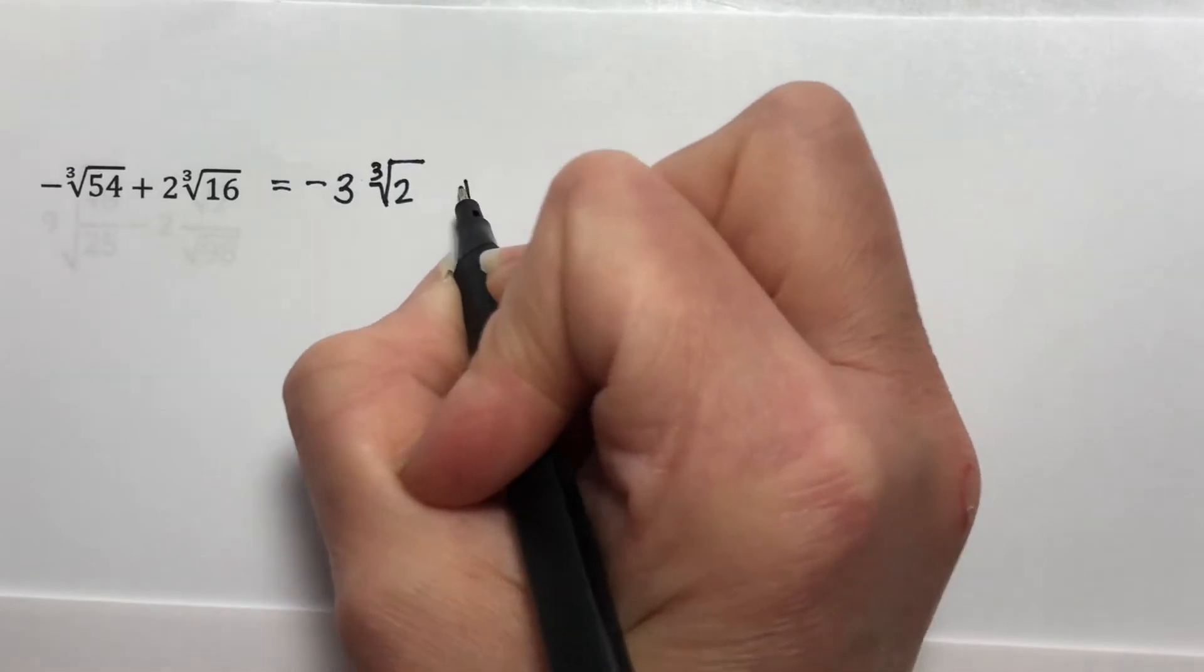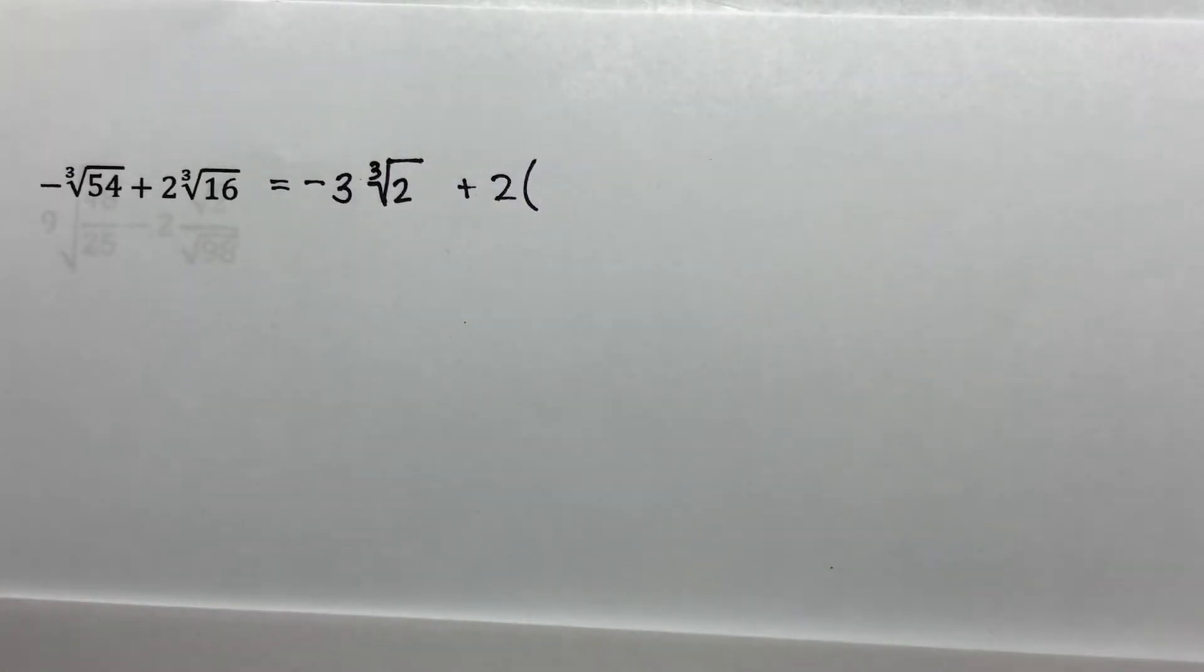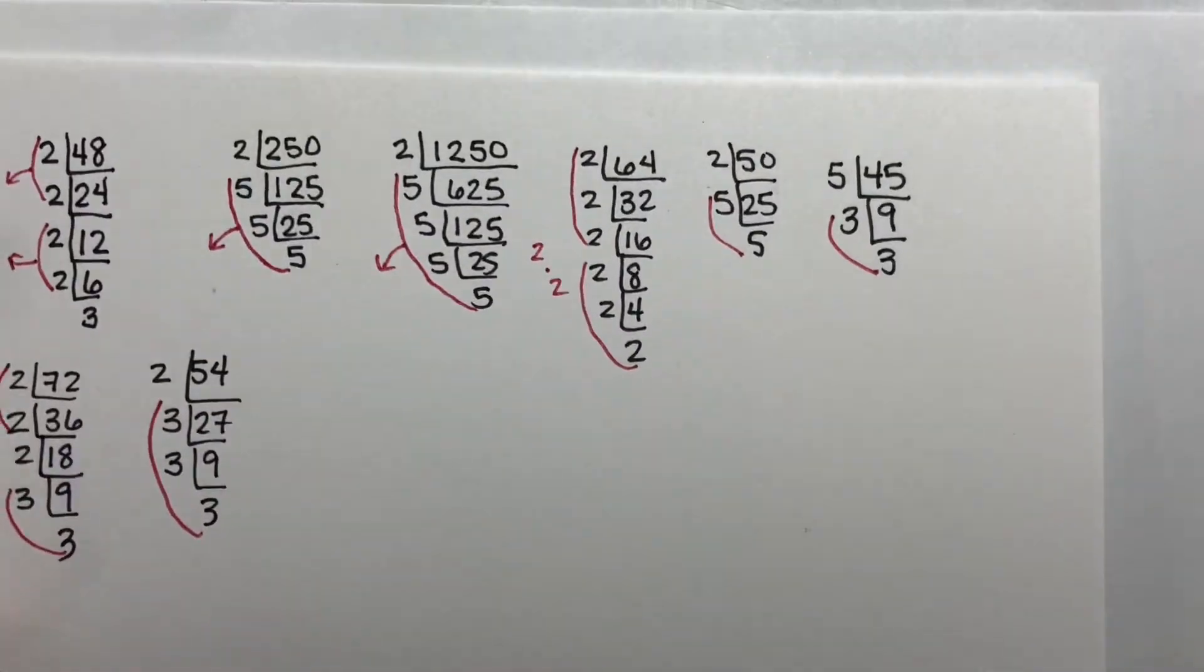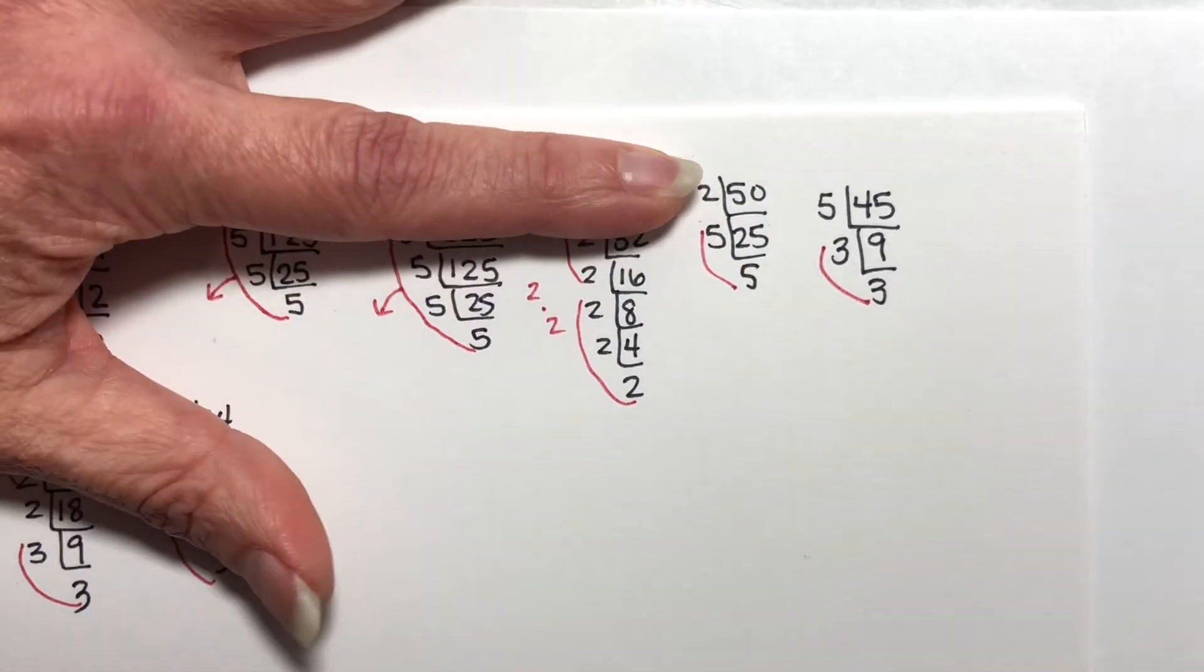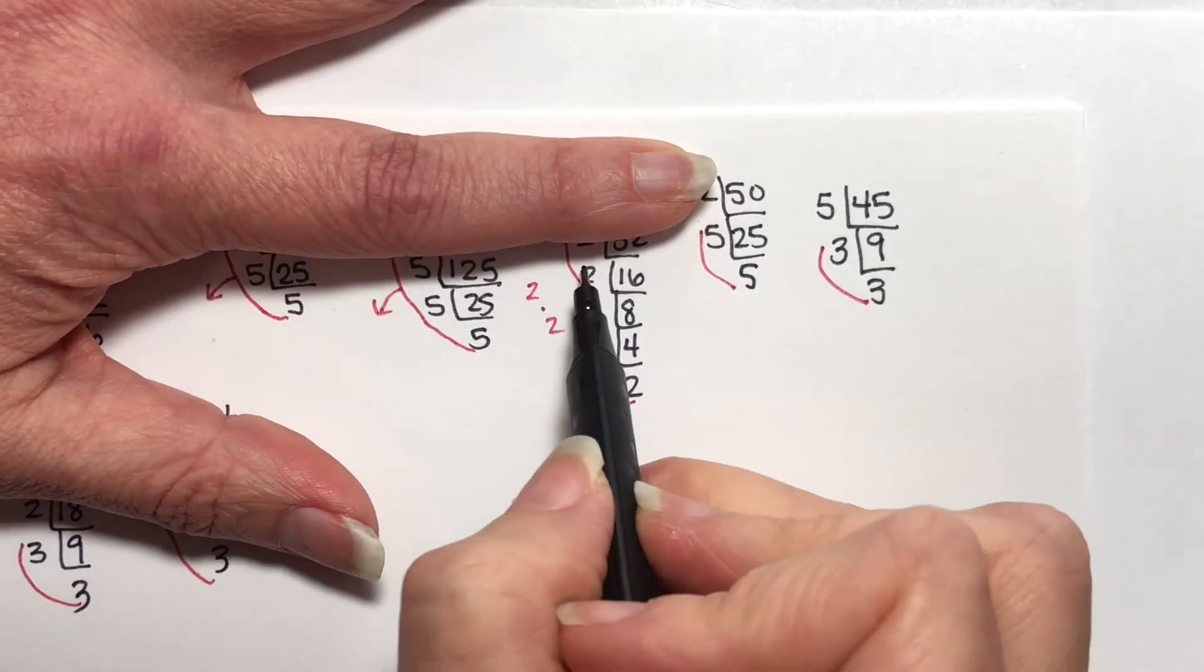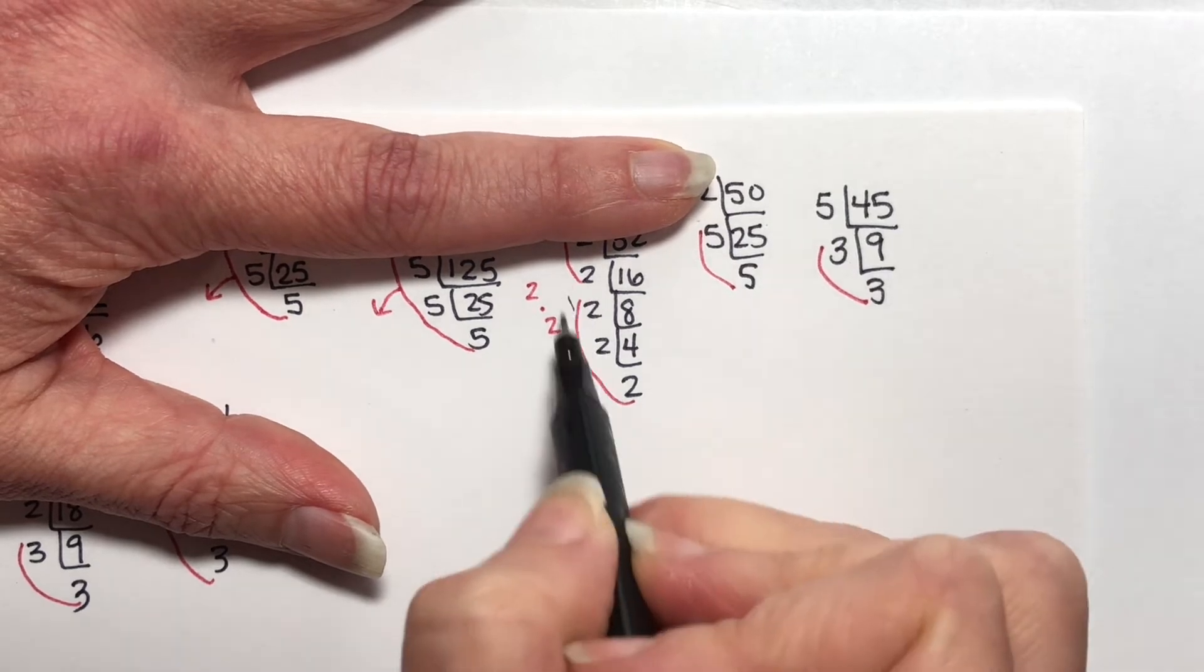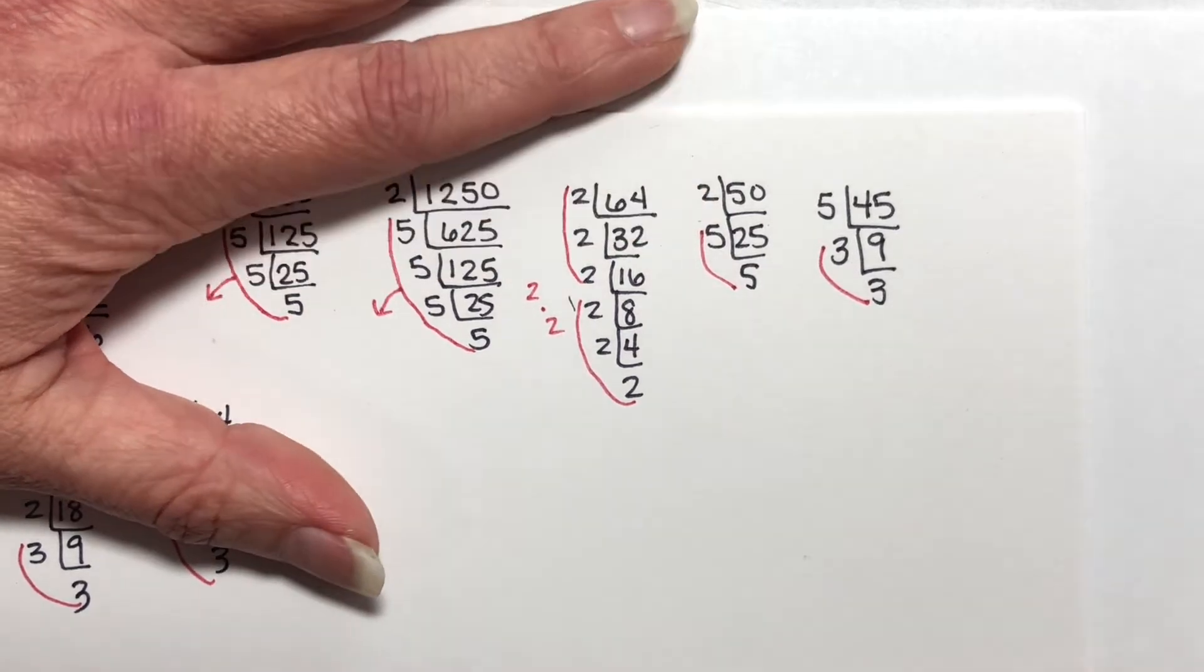Plus two times something, the cube root of 16. I have 16 right in here. So I cover up the 32 and above. I'm looking for three of a kind. So I have three twos here and one leftover. So this is going to be two times the cube root of two.